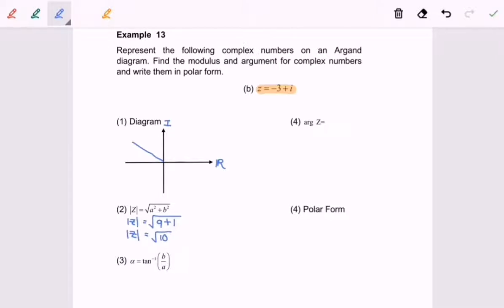Step number three, we're going to find alpha. In this case here will be our alpha. So arc tangent, b equals 1 over 3. We just take the value and ignore the negative sign. So alpha will be equal to 18.43.